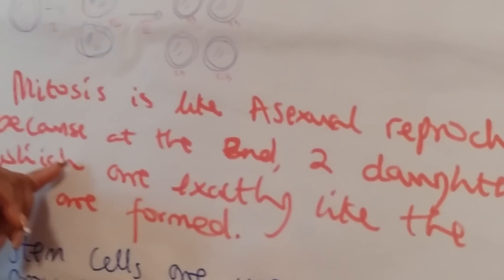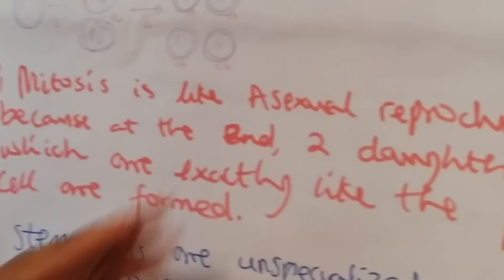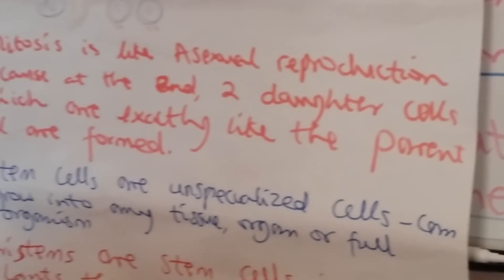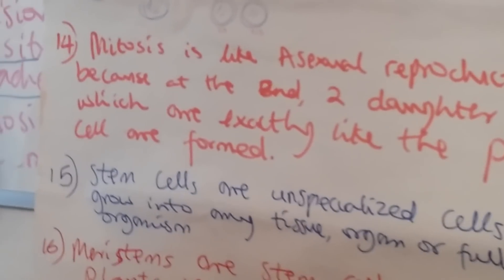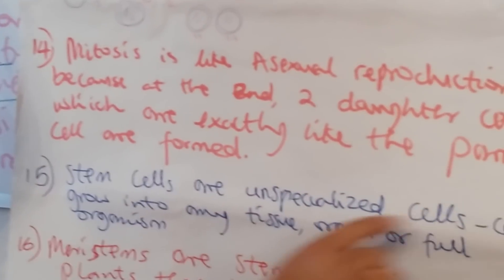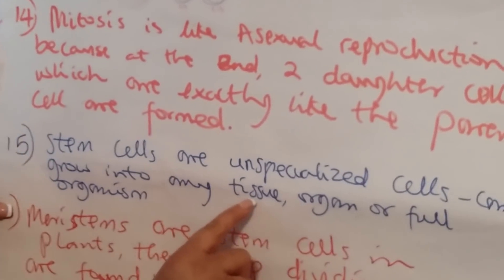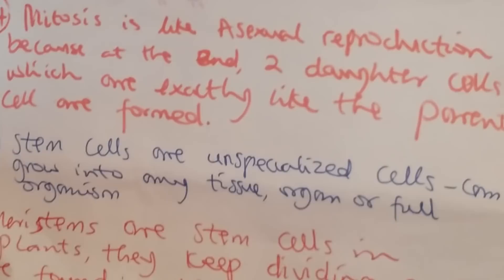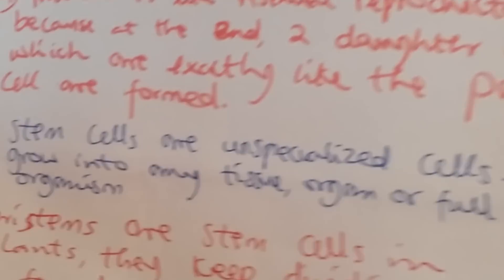Mitosis is like asexual reproduction because at the end, two daughter cells are produced which are exactly like the parent cell. Question 15: What are stem cells? They are unspecialized cells which can grow into any tissue, organ, or even a full organism.